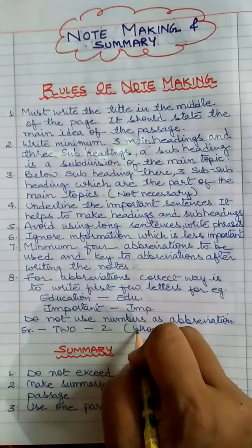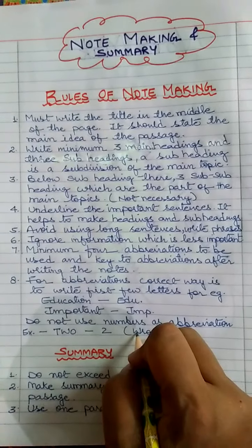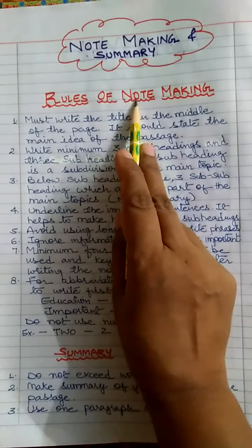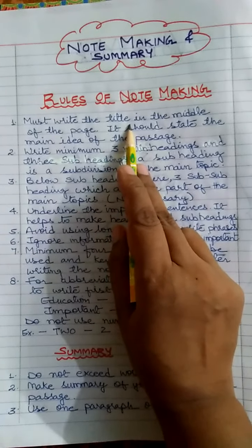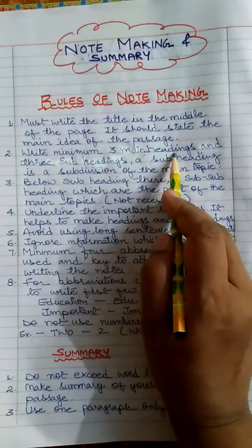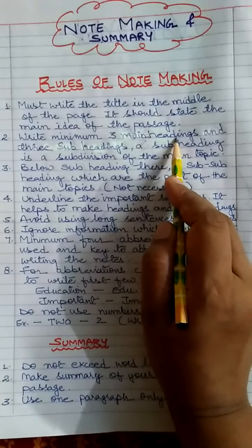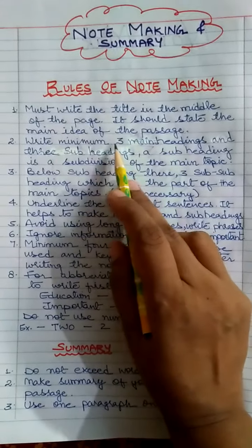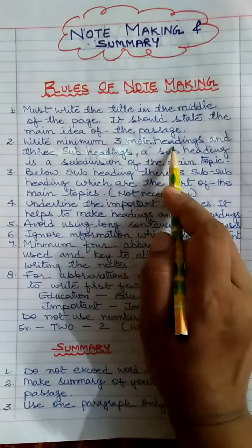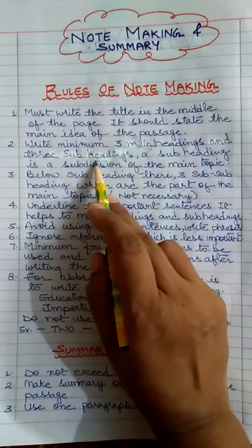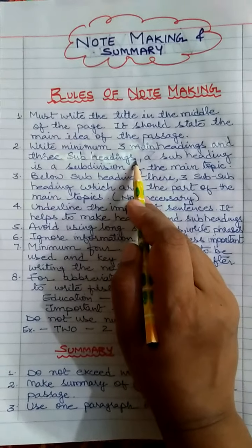Now in the notes we only have to go for title, yeah of course it can be called as heading also. Then three main headings. More than three if we write it's of no use, it will be wastage of time. So try to write three main headings and under these three main headings only three subheadings could be written.